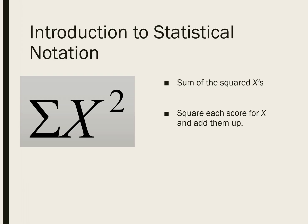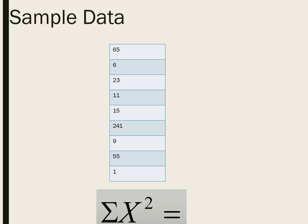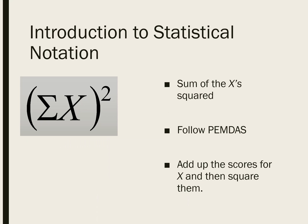So that would be the sum of the squared X's. And then another thing you're likely to encounter often in a basic statistics class is the sum of X squared. So here we see that that sigma X is in parentheses, and then we square it. So what that basically means is we take all the scores for X, add them up. Following order of operations, we do what's in the parentheses first, and then we square the total.